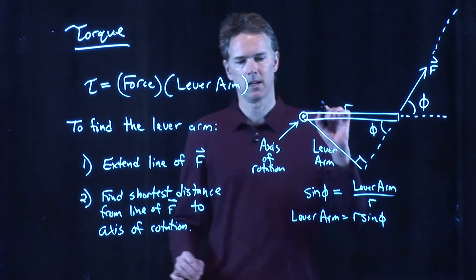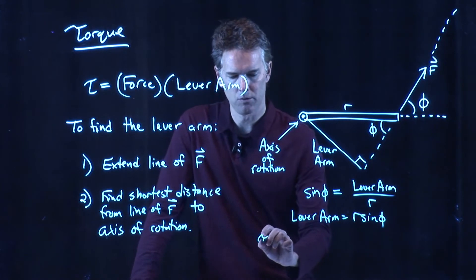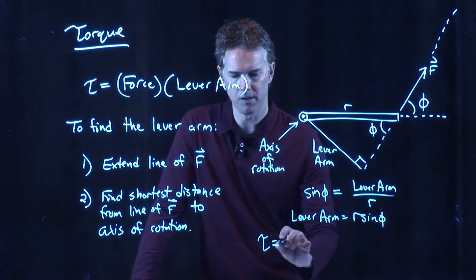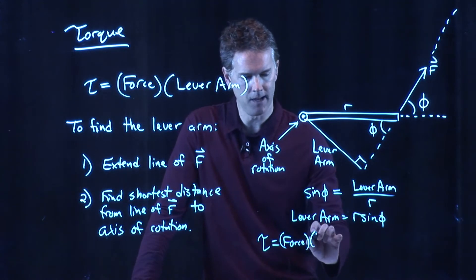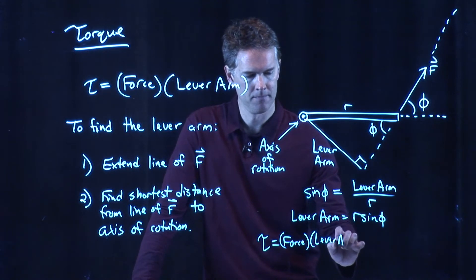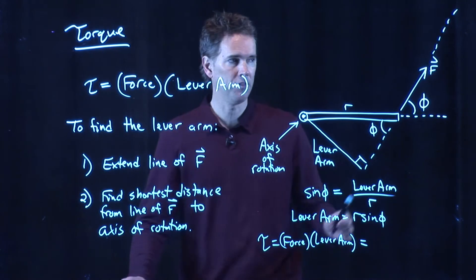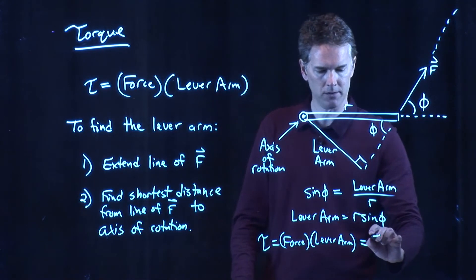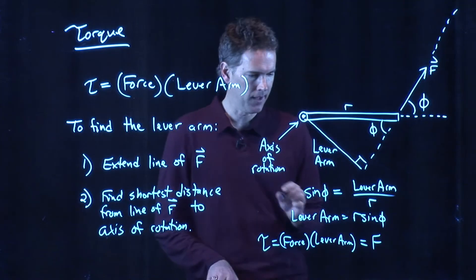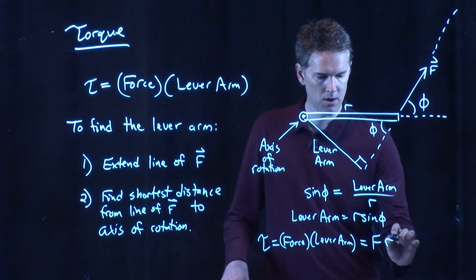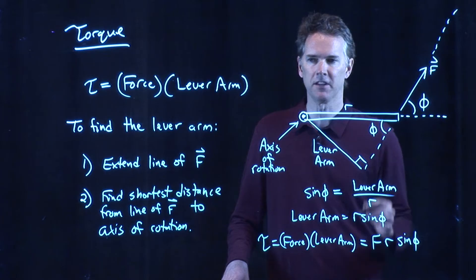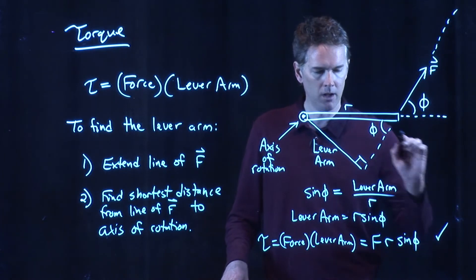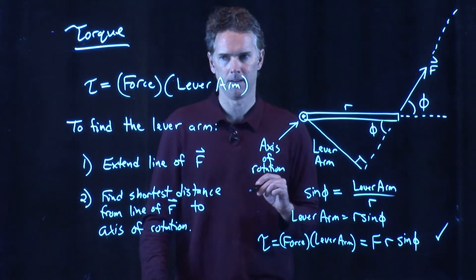And now we can calculate the torque. Torque is equal to force times lever arm. The force is just the magnitude F, and the lever arm we just wrote down: R sine phi. And this is exactly what we had before when we talked about the cross product.